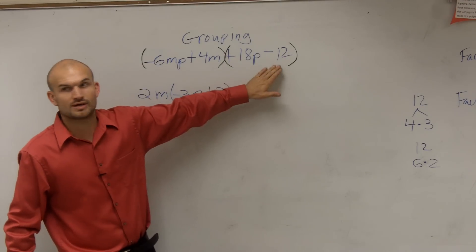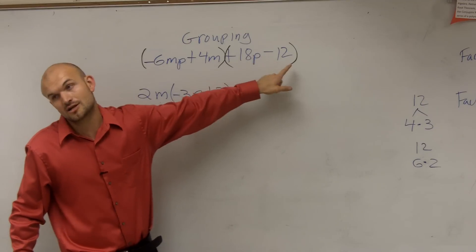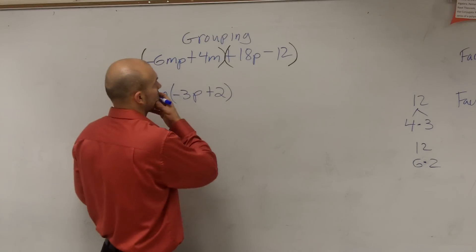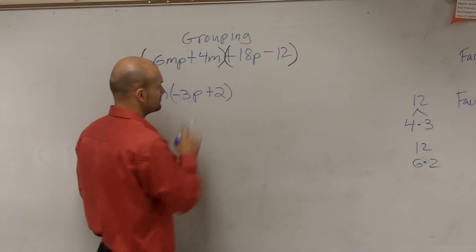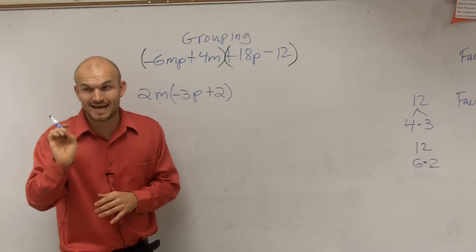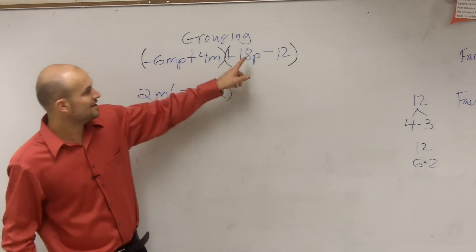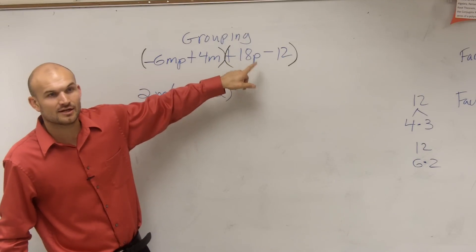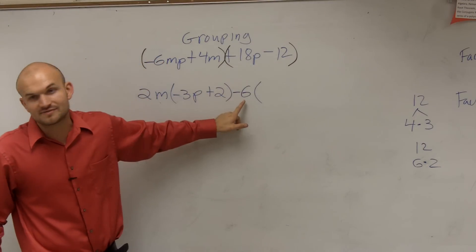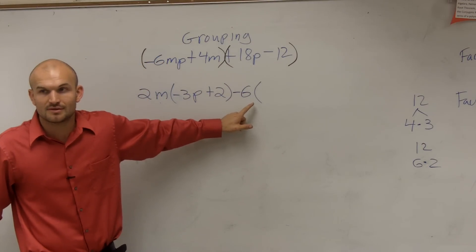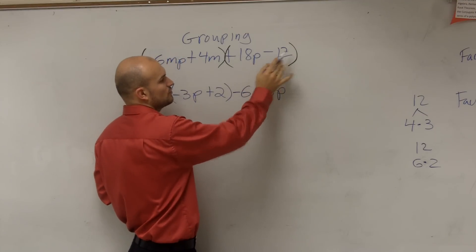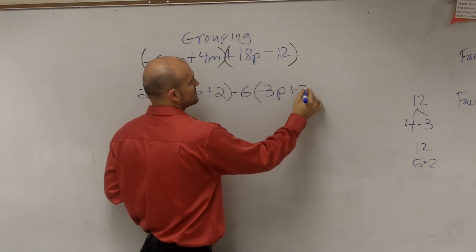Then we look at these two terms. What can we factor out? You can factor out a 6, but you can't factor out a p yet because 12 doesn't have a p. But we can factor out a 6 — actually, I'm going to factor out a negative 6. If you take negative 6 out of positive 18, doing 18 divided by negative 6 gives you negative 3, so you have a negative 3p. And negative 12 divided by negative 6 is a positive 2.